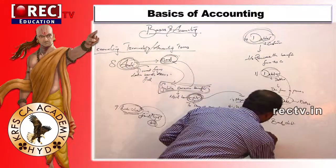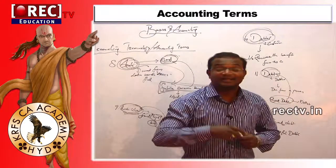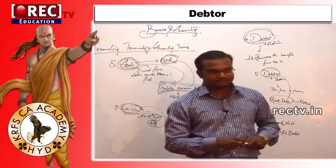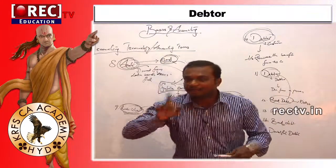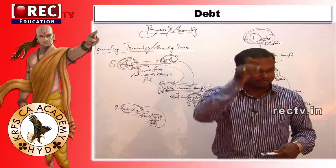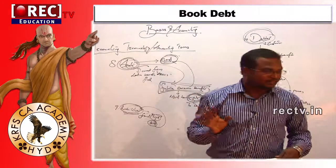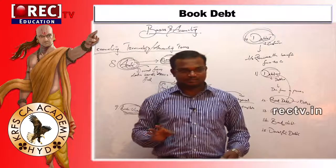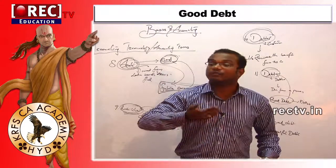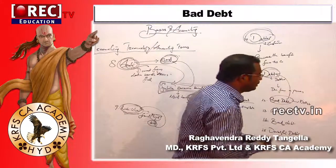What is meant by doubtful debt? Uncertainty exists — it is not certainty. Certainty means good debt; here uncertainty means may or may not recover. Like throwing a rupee into a well — chances of recovering may or may not be there. There is a chance of recovering — that is nothing but doubtful debt. I am doubting — that is what doubtful debt means.